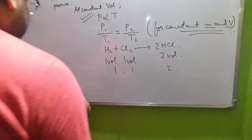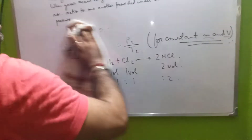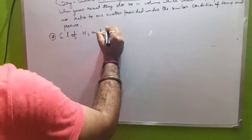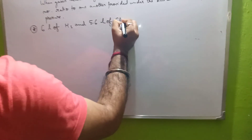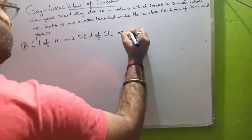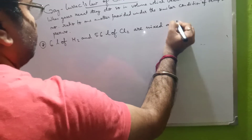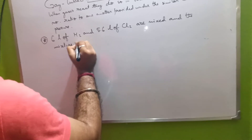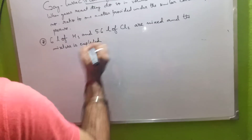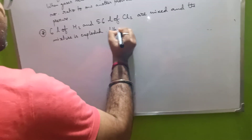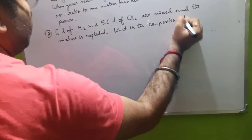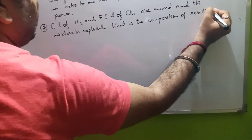Now there is a numerical problem: 6 liters of hydrogen and 5.6 liters of Cl₂ are mixed and the mixture is exploded. What is the composition of the resulting mixture?